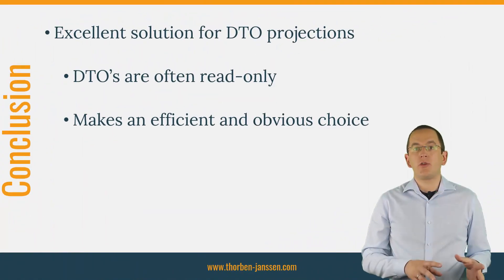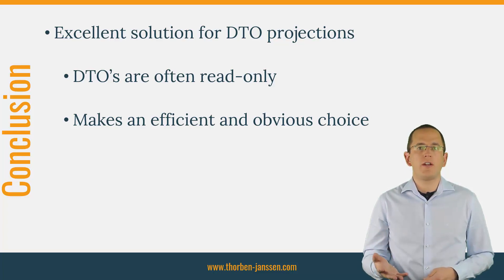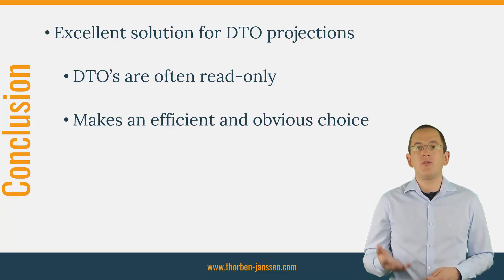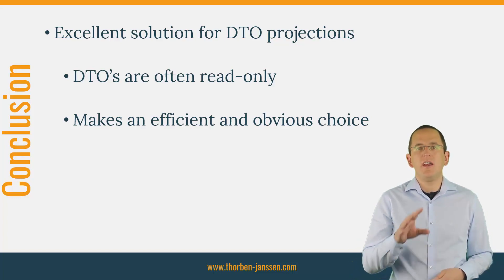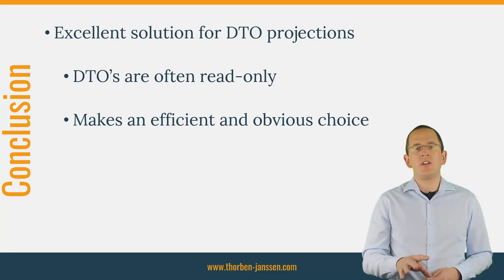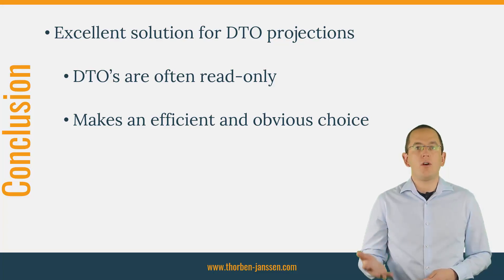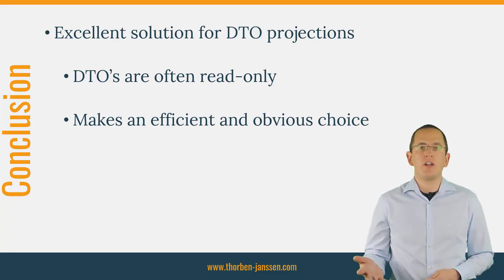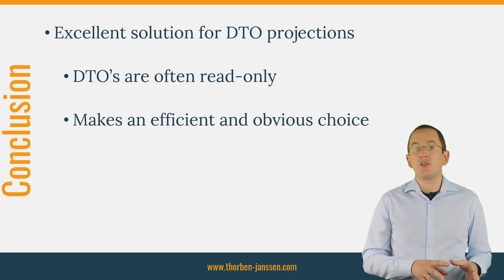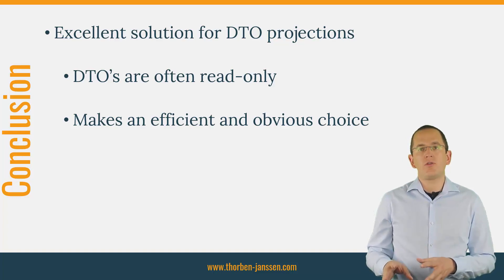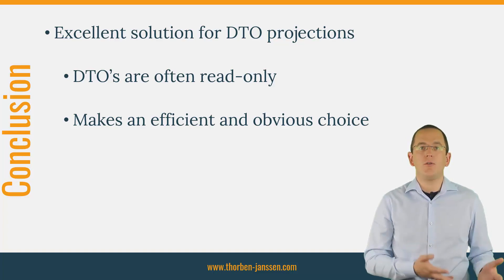Java records are an interesting feature to represent immutable data structures. Compared to regular Java classes, they introduce a few restrictions that don't fulfill JPA's and Hibernate's requirements of an entity class. But they are an excellent solution for DTO projections. DTOs are often read-only and the constructor provided by a Java record is an ideal match for JPA's constructor expressions. This makes them an efficient and obvious choice for all queries that return data that you don't want to change.